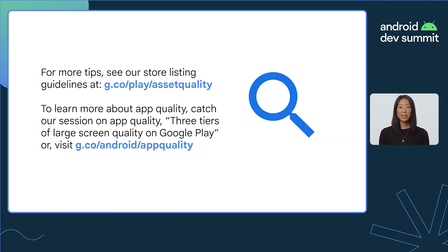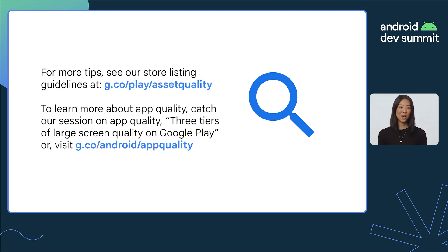For more guidelines like this, visit our support page about store listing assets at g.co/play/assetquality. We hope these features and tips empower you to showcase the best of your app on all device types. Beyond your store listing, don't forget the most important part: building a high-quality app experience.